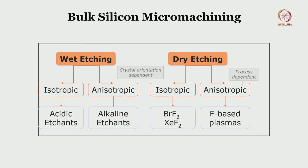In bulk micro machining, we divide etching into two techniques: wet etching and dry etching. Wet etching requires chemicals; dry etching requires gases. Wet etching can be isotropic or, depending on crystal orientation, anisotropic. Dry etching is isotropic or anisotropic — in anisotropic dry etching it is process-dependent and we generally use fluorine-based plasmas, while isotropic dry etching uses BrF3 and XeF2. For anisotropic wet etching we use alkaline etchants, while for isotropic wet etching we use acidic etchants.